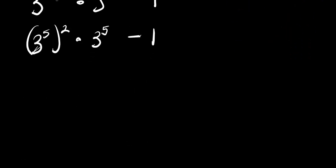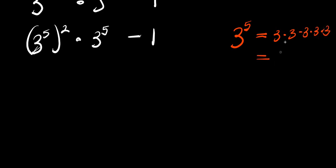Finding the value of 3 power 5: we have 3 power 5 = 3 times 3 times 3 times 3 times 3. So this gives us 9, then 27, then 81, and 81 times 3 is 243. So we are going to replace 3 power 5 with 243.